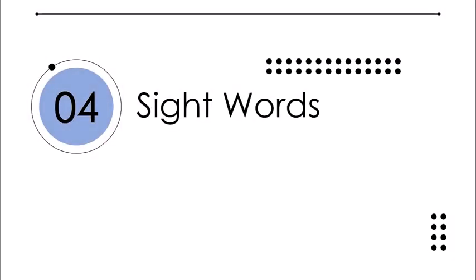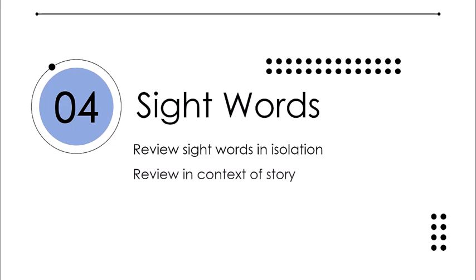To recap, you can target sight word recognition by reviewing sight words in isolation, making sure to treat them as a whole unit as opposed to sounding them out, then reviewing them in the context of sentences to add meaning. Through varied exposures and targeted activities, students will move these words into long-term memory which will help them with rapid recall during reading tasks.